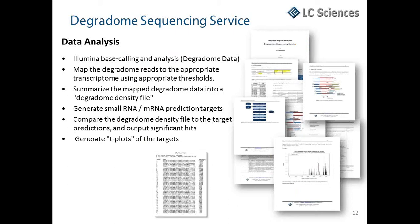The complete advanced bioinformatics package includes Illumina-based base calling and analysis, mapping of the degradome reads to the appropriate transcriptome using appropriate thresholds, a summary of the mapped degradome data into a degradome density file, prediction of small RNA and mRNA targets, comparison of the degradome density file to the target predictions and output of significant hits, and, of course, the T-plots of the targets.